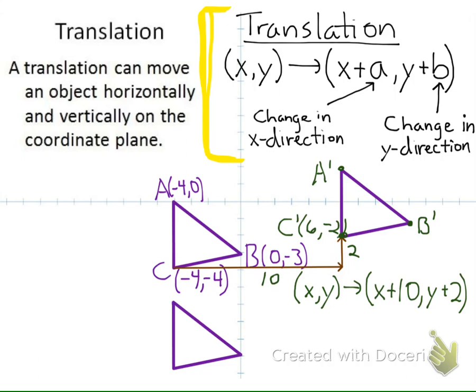Now let's do the same thing to the object we have down below. In this one, we took each point in our original and moved it down. I didn't move left or right any in the x direction, but I did move down 1, 2, 3, 4, 5, 6 units in the y direction. So the new point is now (0, negative 9). And the image of C does the same thing — it's still at negative 4 for x, but now it's negative 10 for y. For this one, we could write it as (x, y) goes to (x, y minus 6).